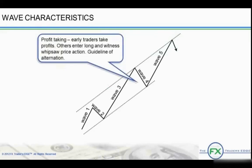Once wave three is over, profit taking enters the picture. The most skillful traders who were into the trend the earliest are now sitting on profits. The character of wave four is different from wave two, although still corrective in nature. Most trading whiplashes occur during wave four. Many traders lose money in wave four. Generally, wave four corrections last much longer and do not retrace as much as wave two.